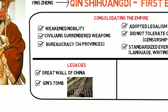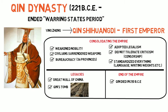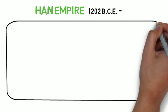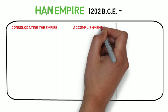Qin died in 210 BCE and was succeeded by an inept son who was soon overthrown in 206 BCE by the man who established the Han dynasty, which lasted for about 400 years. Although Qin's rule only lasted 11 years, he paved the way for the Han dynasty, who continued and built on his legacy, including a strong central government, organized bureaucracy, and extensive imperial expansion.